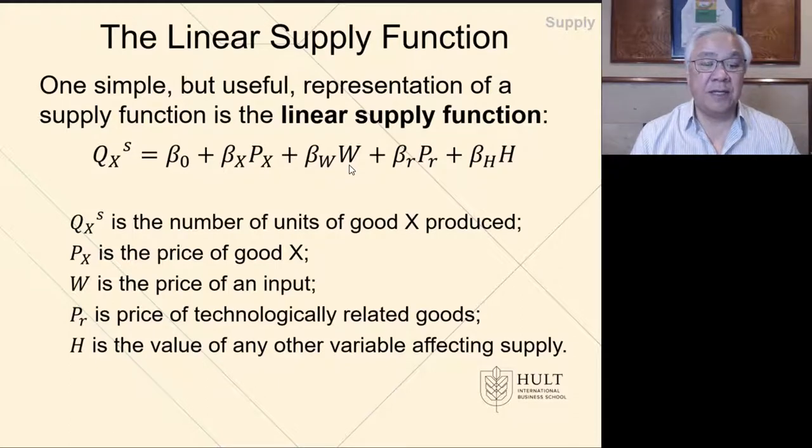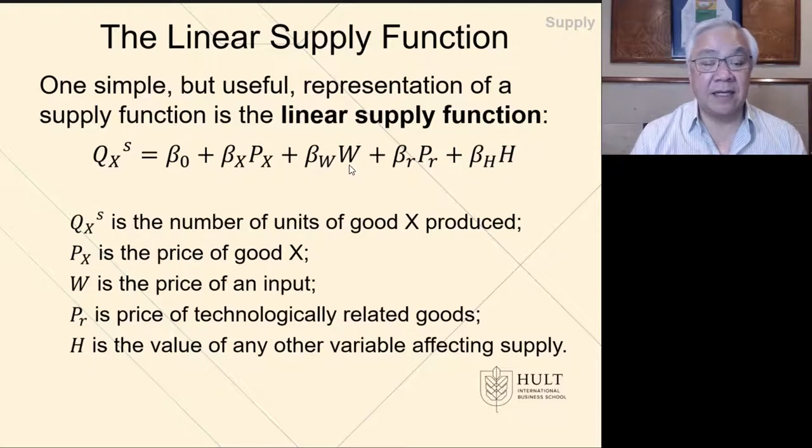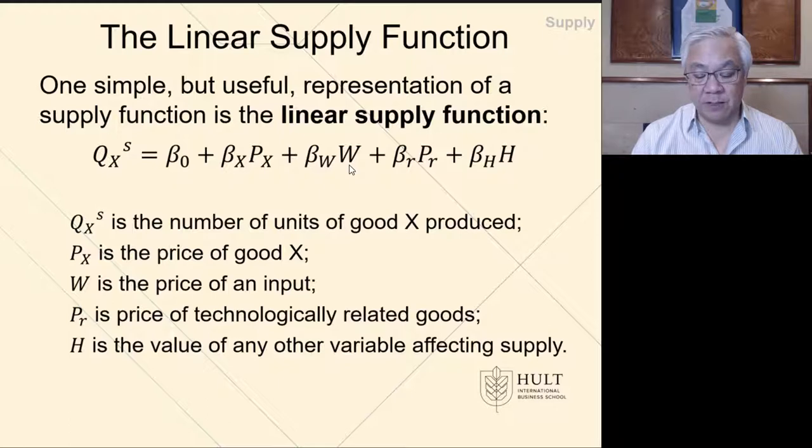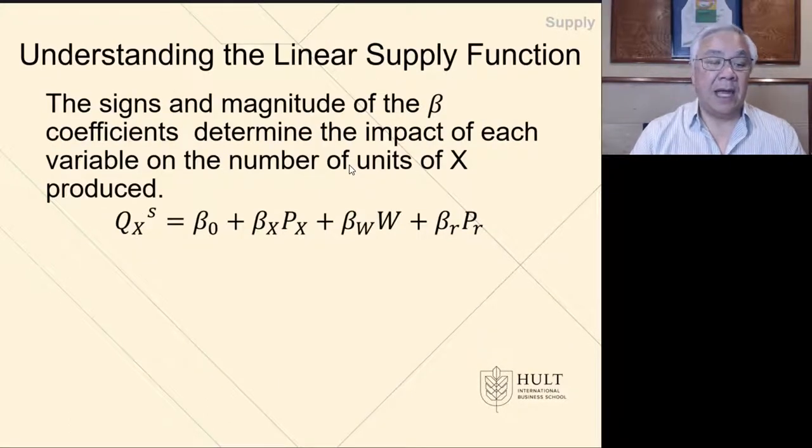Beta zero is the constant. Then we have W, which is the price of an input like wages. PR is the price of a technology-related good, and H is some other variable. This is very similar to the demand curve in abstract form.